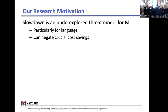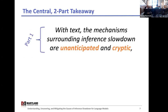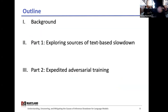I'll present our findings in two main parts. First, I'll talk about what causes slowdown for text, and then I'll talk about a mitigation strategy that we've come up with that's the first effective defense against slowdown. The main conclusions are that the mechanisms surrounding inference slowdown are both unanticipated and cryptic, but understanding them can help us explain the effectiveness of the mitigation strategy I'll introduce.